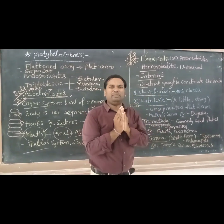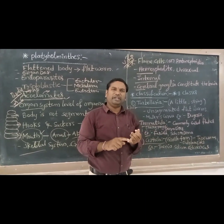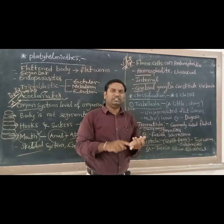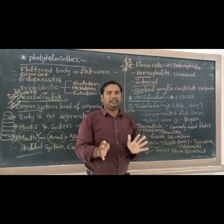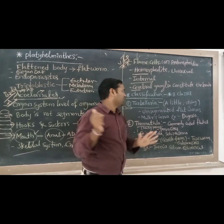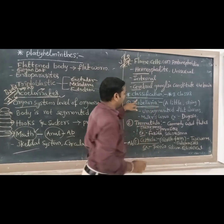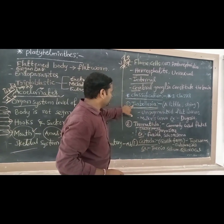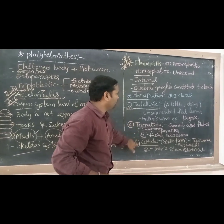Different larval stages are present in Platyhelminthes: miracidium, sporocyst, redia, cercaria, and metacercaria. The classification of Platyhelminthes has three parts: Turbellaria, Trematoda, and Cestoda.